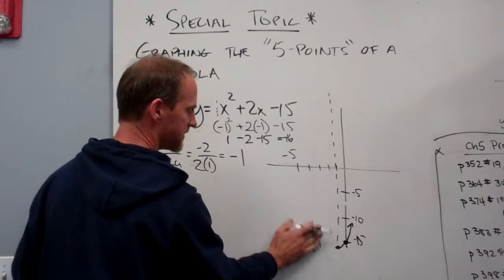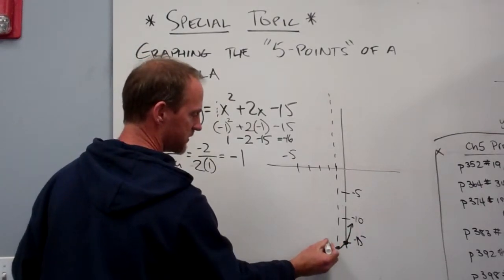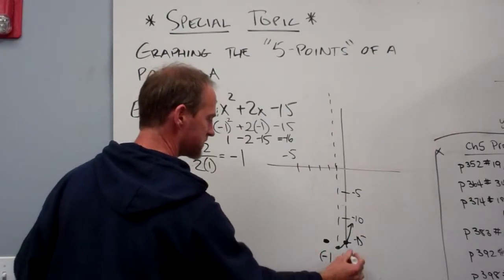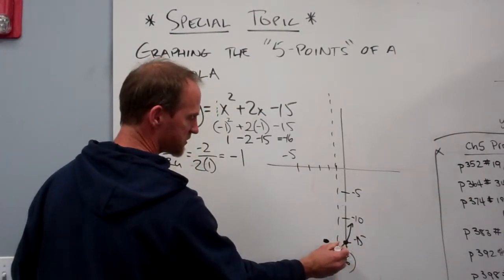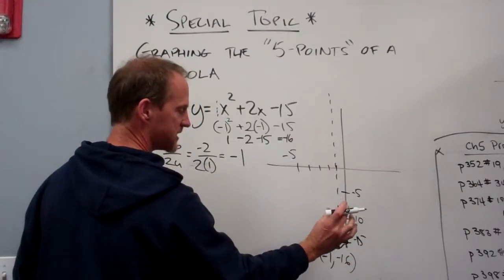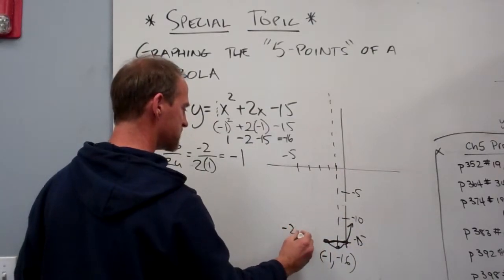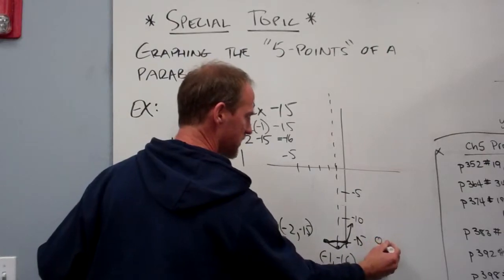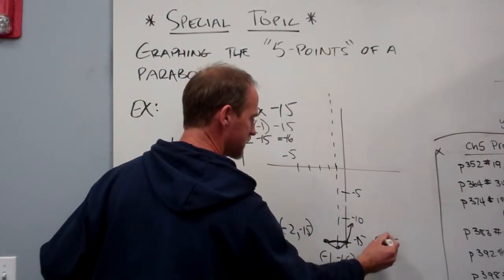Give myself a little bit of room. That vertex is negative 1, negative 16 for the third time. This is my symmetric point. Well, if I'm 1 unit that way, I'm going to go 1 unit beyond because of my symmetry rule. And that's minus 2, negative 15. Whereas this was 0, negative 15 for my intercept.